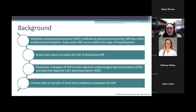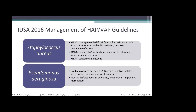Before getting into the trial, I want to remind everyone of our guideline-recommended empiric treatment for VAP. Empiric treatment comes from our Infectious Diseases Society of America, or IDSA, 2016 guidelines for HAP and VAP. The guidelines recommend empirically covering for Staph aureus and Pseudomonas — specifically MSSA — and also covering for MRSA in patients with a risk factor for resistance.